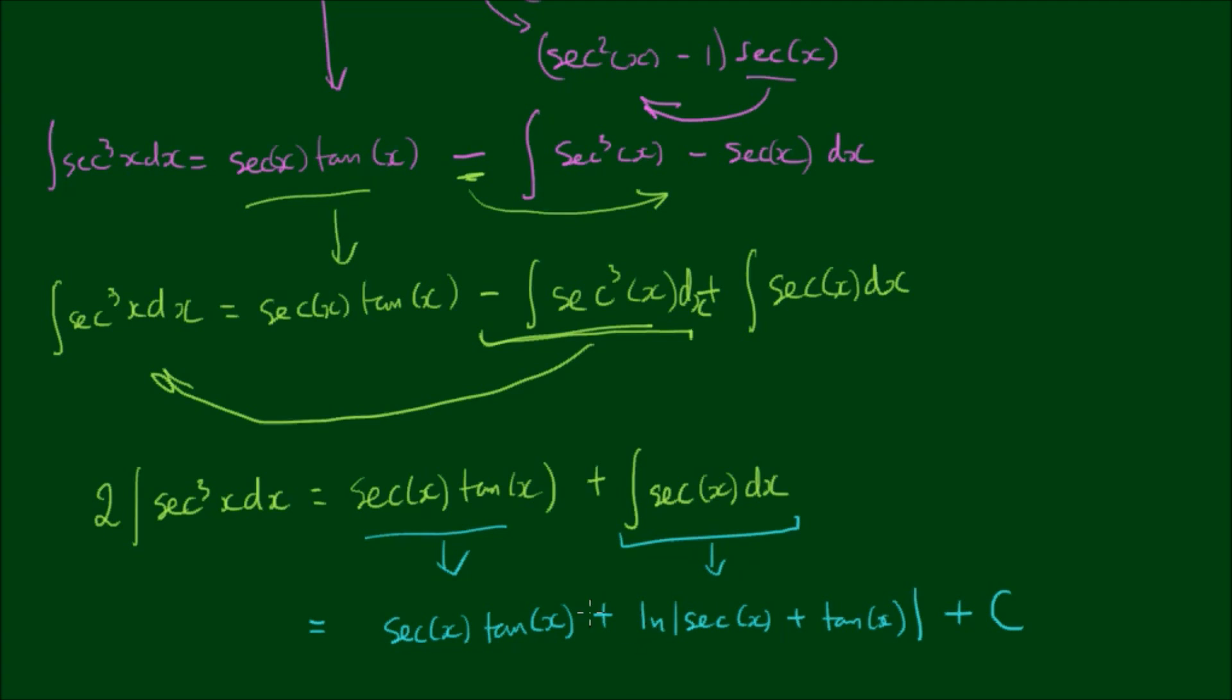So if we divide both sides of the equation, we can say that the integral of sec³(x) dx is equal to a half of sec(x) tan(x) plus a half of the natural log of sec(x) plus tan(x) plus a half of the integration constant c, which is just going to end up being another constant. So let's call that constant k.